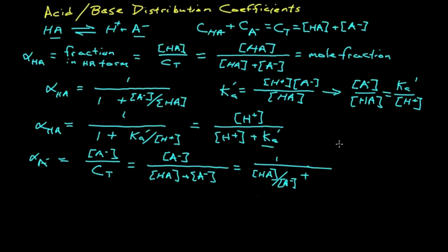The numerator becomes 1, the denominator becomes HA over the anion concentration plus 1. Now, very similar to before we had the ratio of A minus over HA, we want just the reciprocal of that. So it must be the reciprocal of this term here. So we have 1 over H plus over KA prime plus 1.